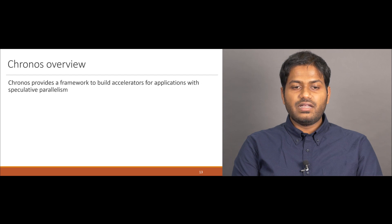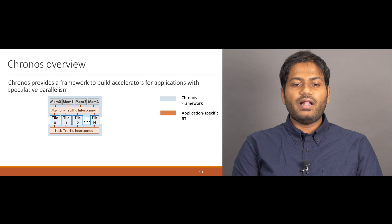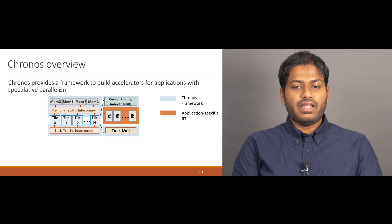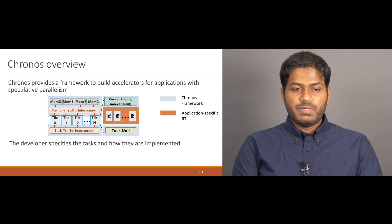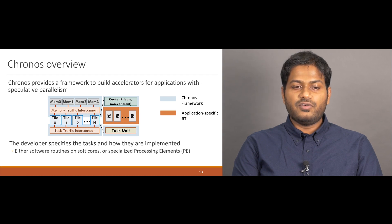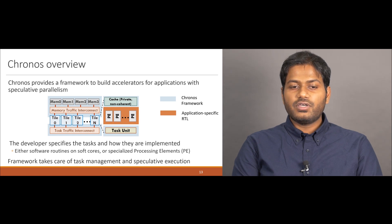Kronos is a framework to build accelerators for applications with speculative parallelism. Kronos implements a multi-tile system, where tiles are connected through two interconnects for task and memory traffic. Each tile consists of a private cache that is not kept coherent with those of the other tiles, and a task queue, a task unit and processing elements to run the task logic. The application developer specifies the tasks and how they're implemented, which can either be through software routines running on soft cores or through specialized hardware processing elements. The Kronos framework takes care of task management and speculative execution.